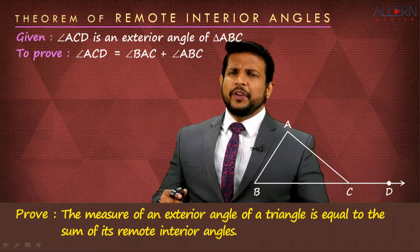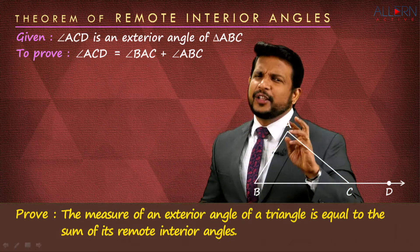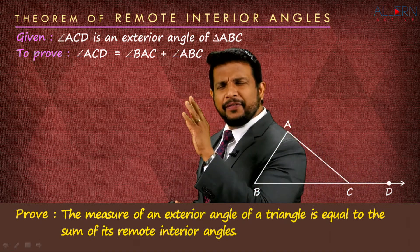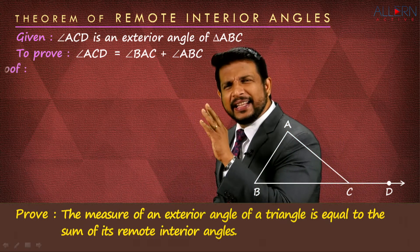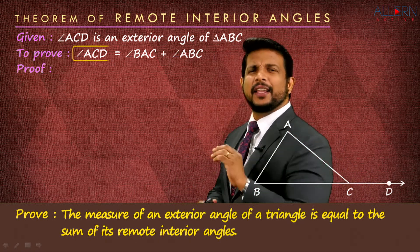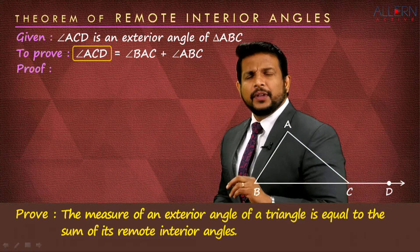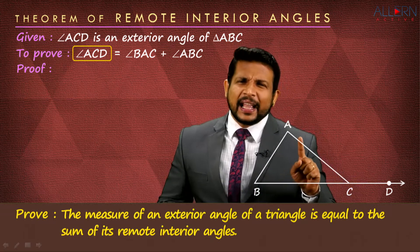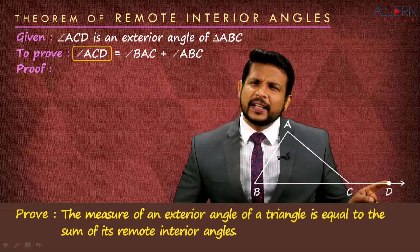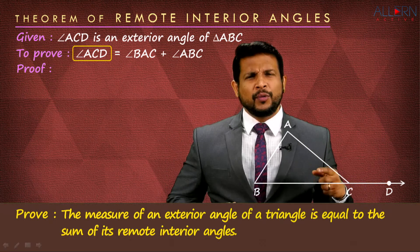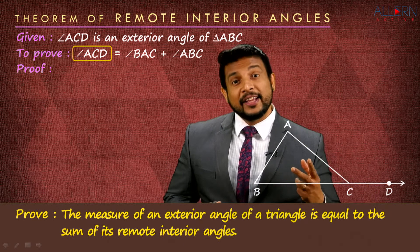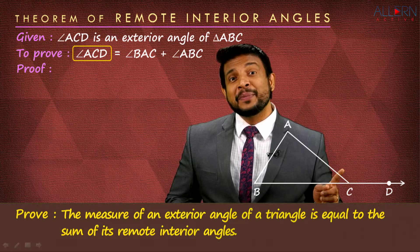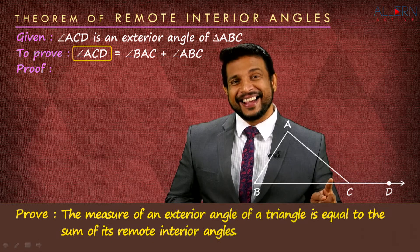When you look at the to-prove, we want angle ACD equal to angle BAC plus angle ABC. Let's think about the left-hand side — angle ACD. Do we know something about it? We know it's an exterior angle, and what do we know about an exterior angle? An exterior angle forms a linear pair with an interior angle.